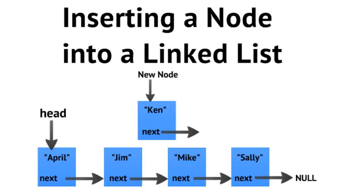This video is about being able to find the location and logically look at how we update the pointers and what pointers we need to keep track of in order to insert a node at any particular location in our linked list. In this example, we have a linked list with nodes that have names — April, Jim, Mike, and Sally — and we're trying to maintain these nodes in alphabetical order. We're interested in inserting a new node, Ken, into our linked list.